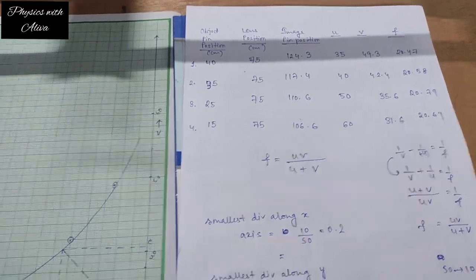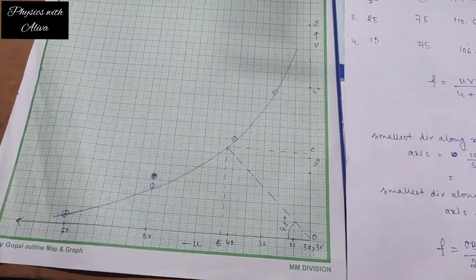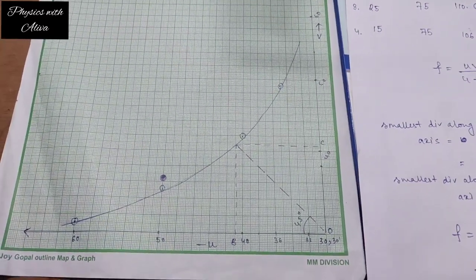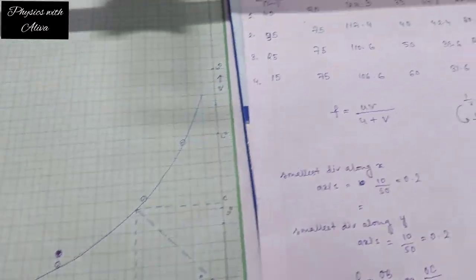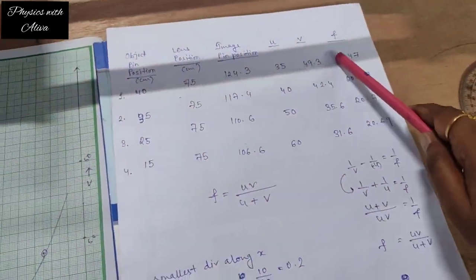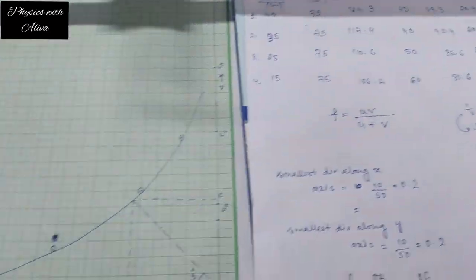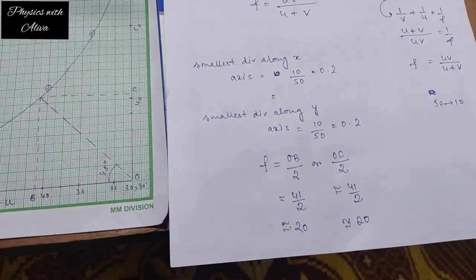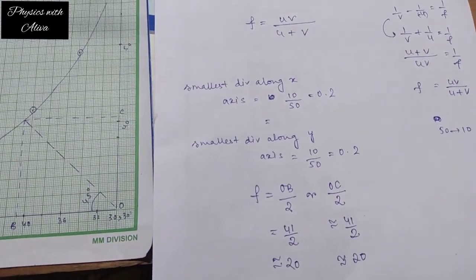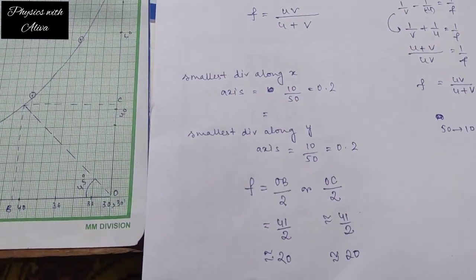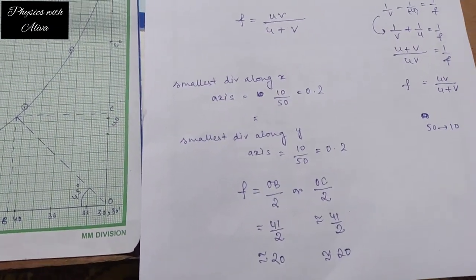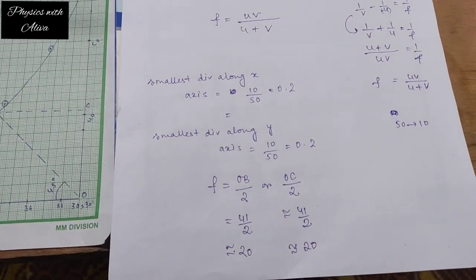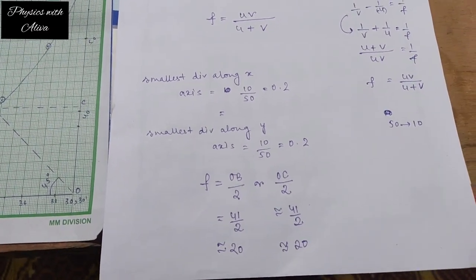So we found the focal length first by the rough method, then by the u-v method using the formula, and finally verified it from the graph. I hope you understood this. If you have any doubts, ask in the comment section. Thank you everyone — please like, share, and subscribe to the channel.